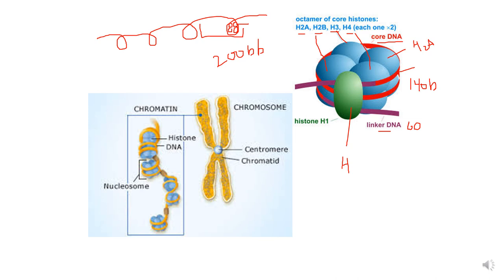The histone proteins are of five kinds: H2A, H2B, H3, and H4 — with two molecules of each of these four histone proteins present, which is why it is called an octamer of histone proteins. This octamer is wrapped with some amount of DNA, and then histone H1 is also present as a linker histone. H1 links the two nucleosome particles.